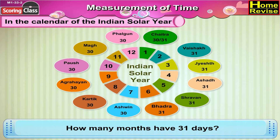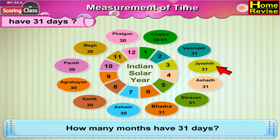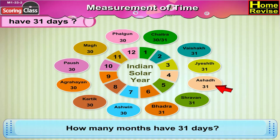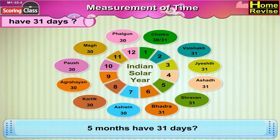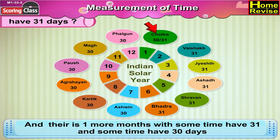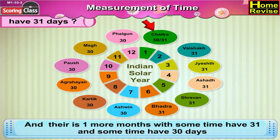how many months have 31 days? Counting: 1, 2, 3, 4, 5. Five months have 31 days, and there is one more month which sometimes has 31 and sometimes 30 days.